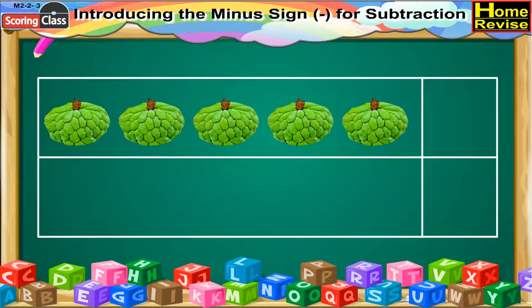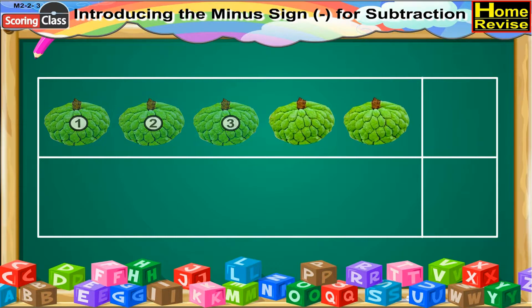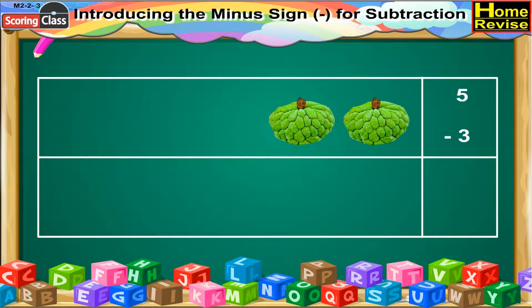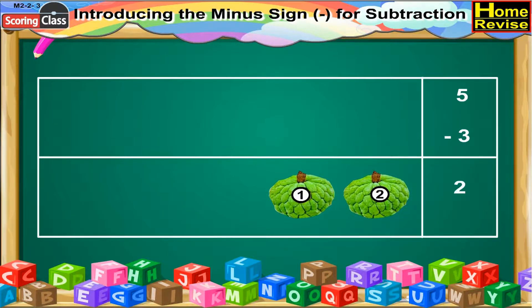In the second segment, I can see there are five custard apples. Do you like custard apples? Well, I love it too. Out of five custard apples, three of them are taken away. So, how many custard apples are left? That would be five minus three. So, the answer is two. Two custard apples are left.